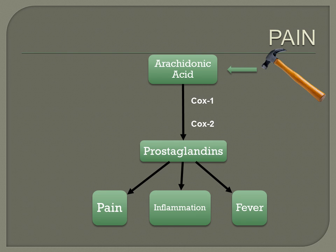For example, I hit my thumb with a hammer. The pain receptors on my thumb release a chemical called arachidonic acid. In our bodies are many enzymes, and two of those are cyclooxygenase — we call them COX for short. These enzymes are all over our bodies and do many functions. One job of COX-1 is to help maintain the normal lining of our stomach; it's also involved with kidneys and platelet function. COX-2 is present at the site of inflammation.